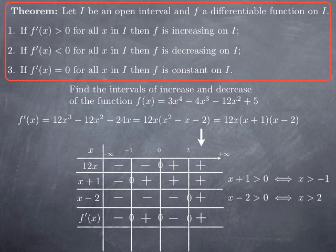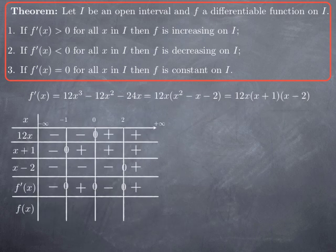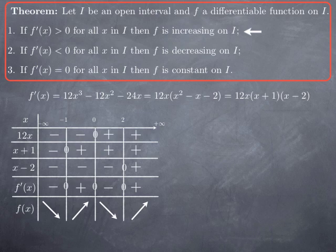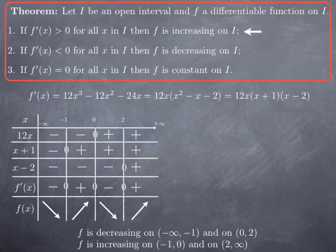Now we interpret this for the function f using the criterion. On (−∞, −1), f' is negative, so f is decreasing. On (−1, 0), f' is positive, so f is increasing. On (0, 2), f' is negative, so f is decreasing. On (2, ∞), f' is positive, so f is increasing. We have found the intervals of increase and decrease explicitly.